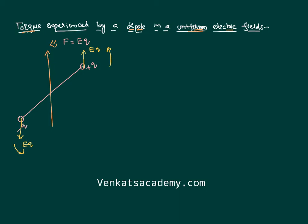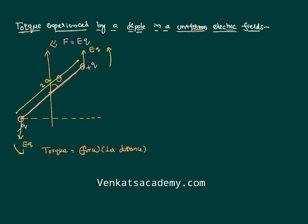The length of the dipole is generally treated as 2a — treating the center as the midpoint, one side is a and the other is a, together making 2a. Now, because of this force, the dipole is making an angle theta with the applied electric field. To calculate torque, when there is a couple — two forces acting — torque equals any one force multiplied by the perpendicular distance between the two forces. The distance 2a is not a perpendicular distance, so I need to draw a perpendicular line to find that distance x.